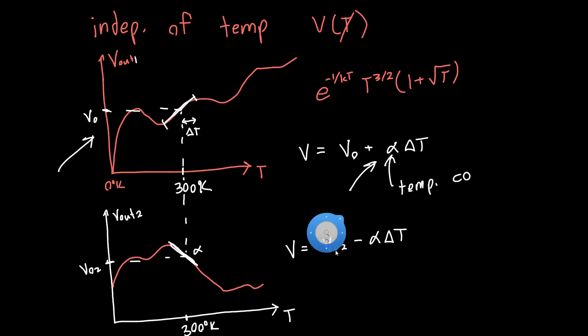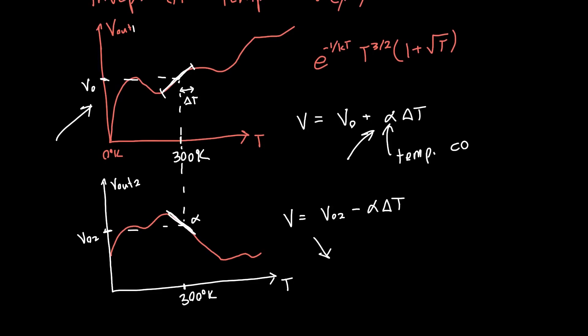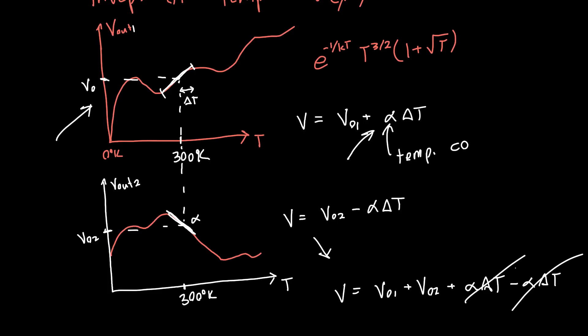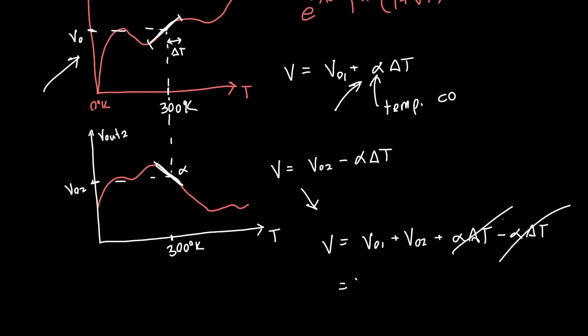So if we could somehow add these voltages together, then we'd get a total V of V naught 1 plus V naught 2 plus alpha delta T minus alpha delta T. And so the temperature dependence at least in this region will cancel out and we'll have some V naught 1 plus V naught 2. And so at least within this region, this guaranteed region of say 250 to 350 Kelvin, we've got something that's approximately independent of temperature.